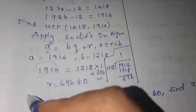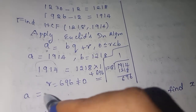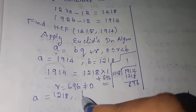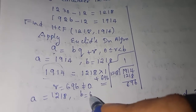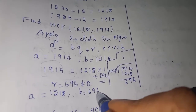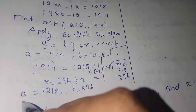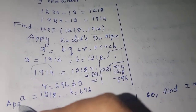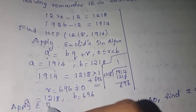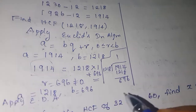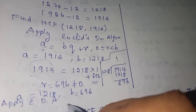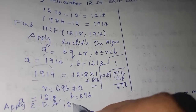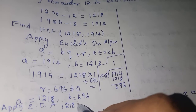Now take the previous divisor 1218 as A and the remainder 696 as B. Apply Euclid's Division Algorithm again.